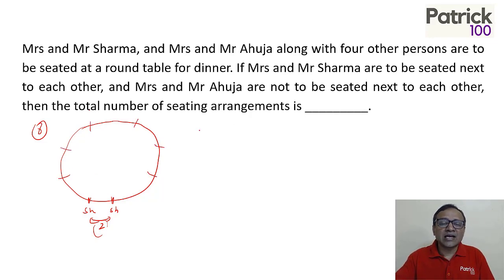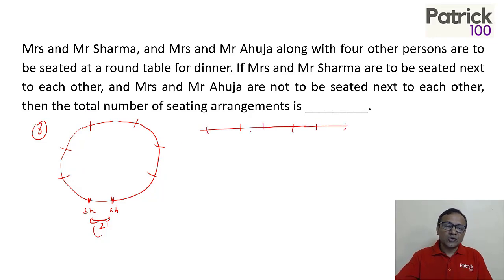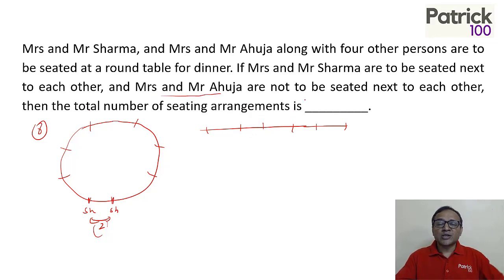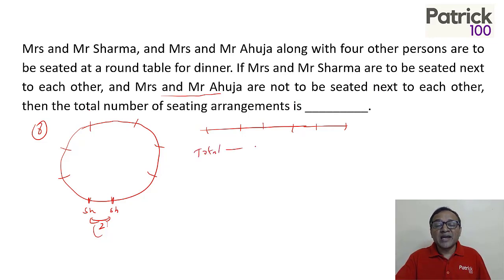Now when you have the condition where two people are not seated next to each other, how do you calculate? Total ways minus seated next to each other. So the answer is: total ways minus seated next to each other.